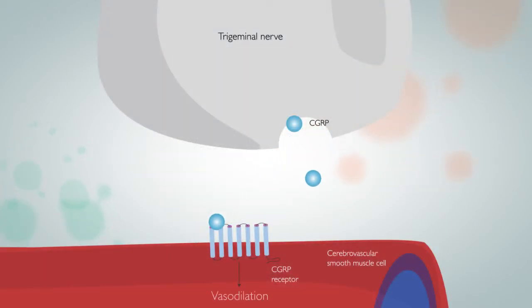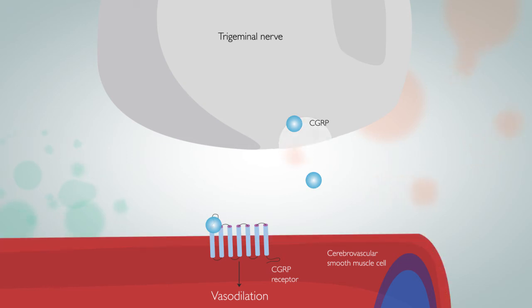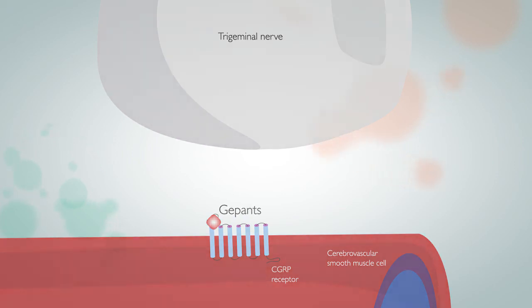Small molecule CGRP receptor antagonists, or GEPANTS, have been shown to selectively bind to the CGRP receptor, therefore blocking CGRP from binding. GEPANTS, like DITANS, do not cause vasoconstriction, so are also proving safe for those with cardiovascular comorbidities.